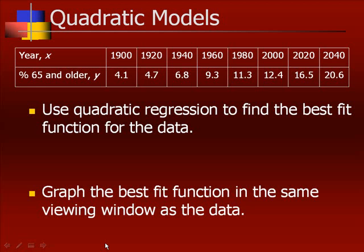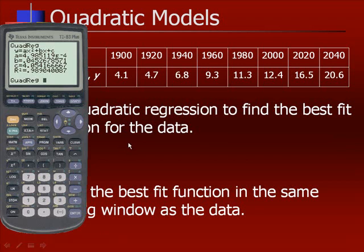Now use quadratic regression to find the best fit function for the data. Notice this is ax squared plus bx plus c formula. When we go into our calculator to do the quadratic regression, notice this 4.98 is e to the negative fourth, which means we move the decimal back four places. So we get y equals 0.0005x squared if we round. Our x term would be 0.045x and then our c term would be 4.054.